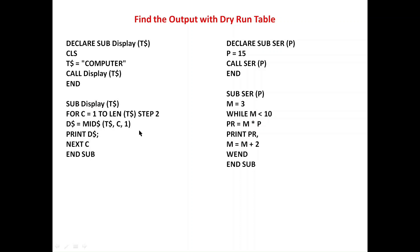Let me show you the output of this program. The output will be: C, M, U, E — first C, then M, U, and E. This is the output of this program. You can test it, and if you are confused you can comment below and I'll make a video on this as well.